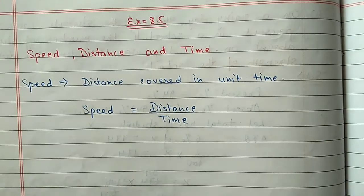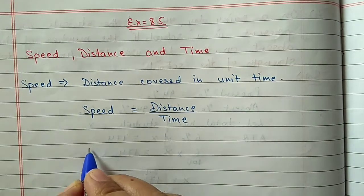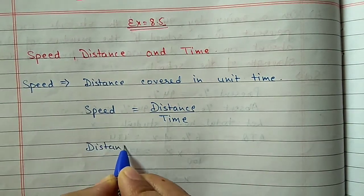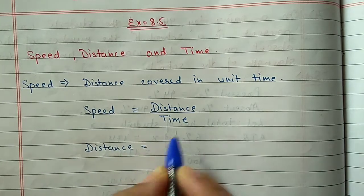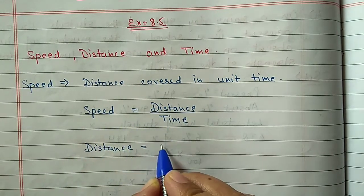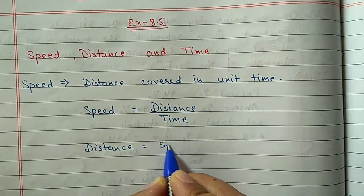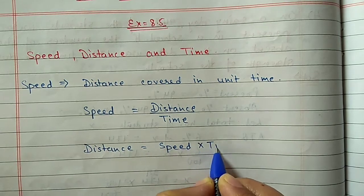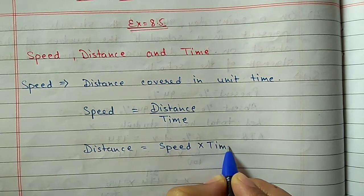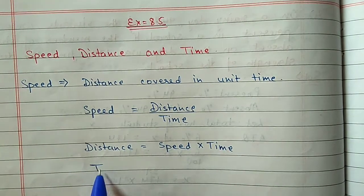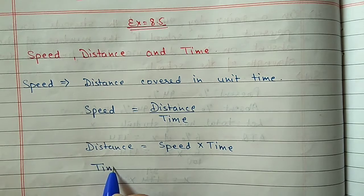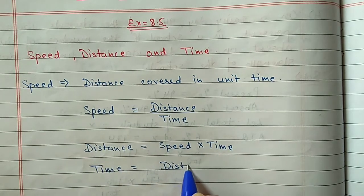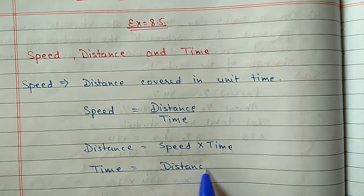With this formula we can also find the formula for distance and time. Distance is equal to speed into time — we can shift time to the other side for multiplication. And time is equal to distance divided by speed.